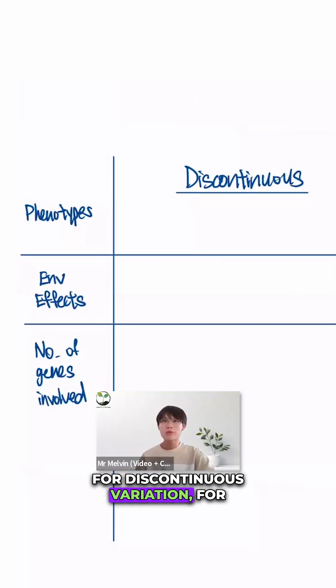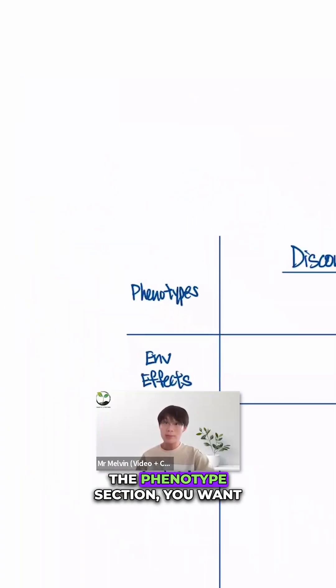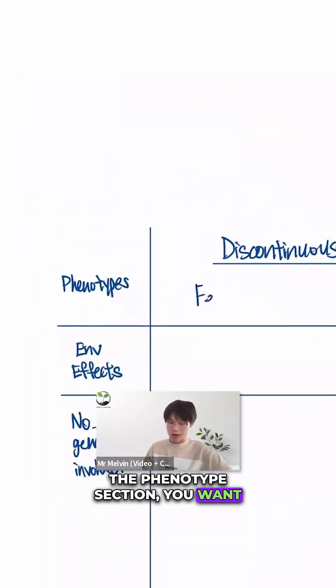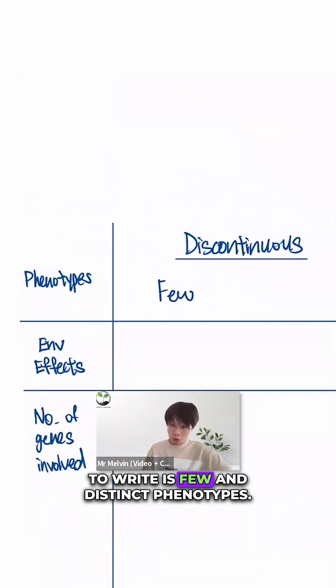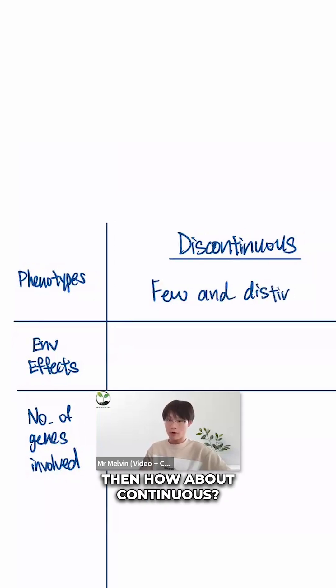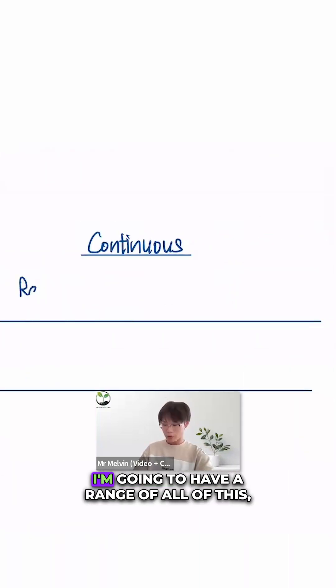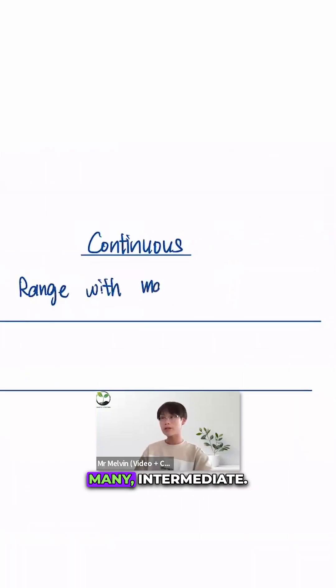For this discontinuous variation, for the phenotype section, you want to write 'few and distinct phenotypes.' Then how about continuous? It's going to have a range of all of this — many intermediate.